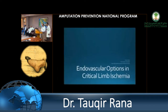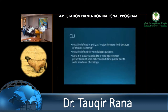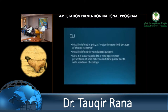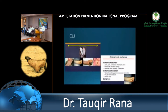Let's talk about the endovascular options in critical ischemia. It is interesting to know that CLI was first used in 1985 for major threat to limb because of chronic ischemia, excluding diabetes. It's very interesting that diabetes was not part of the initial definition of CLI, and now diabetes has become an integral part of the CLI definition. It varies from rest pain to ulceration to gangrene — the whole spectrum is part of that.